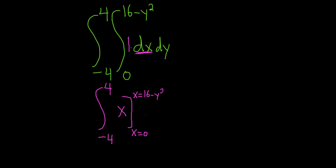You don't have to put the x there like I did, I kind of like to for added clarity. Let me put a double bracket here for clarity. So we first plug in the upper limit of integration. This is negative 4 to 4, so plugging in the upper limit we get 16 minus y squared, minus the lower limit which is 0, and then we have dy.